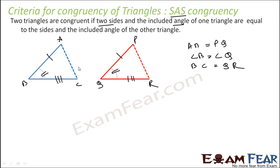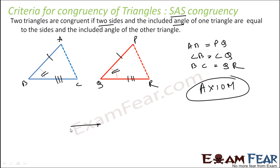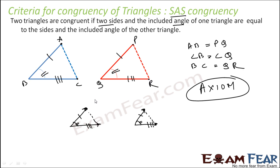Please note: SAS is not a theorem — it is an axiom. There is no formal proof for it. You can see it visually: if this length equals that length, this length equals that length, and this angle is also the same, then these points will have the same distance too, and the triangles will be identical. There is no proof for this — it is an axiom.